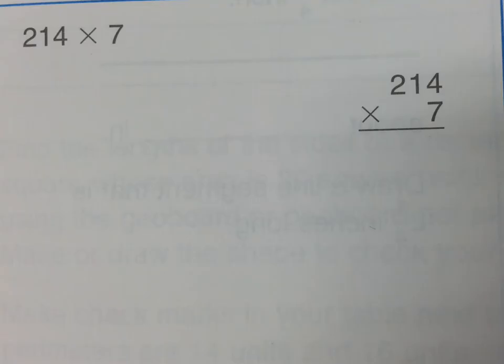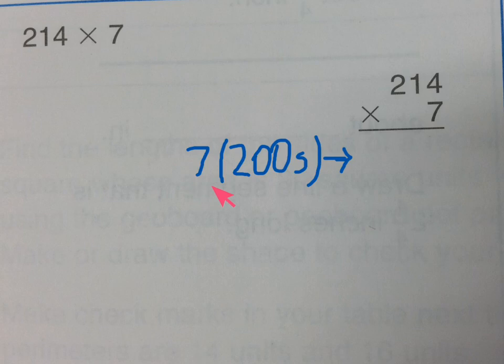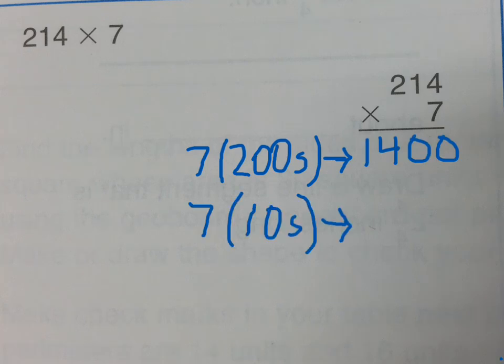Those examples were all two digits times one digit. If we do three digits times one digit, we'll have three products to add together instead of two. So 214 times 7 would look like this. First, 7 times 200 - that's 7 times 2 is 14, so 1400. Next, the tens place, making sure place values line up.